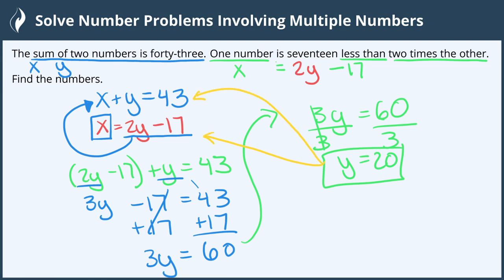I'm going to go with the second equation. So we get X equals 2 times 20 minus 17. 2 times 20 is 40. 40 minus 17 gives us 23. So our two numbers are 20 and 23, and we're all done.